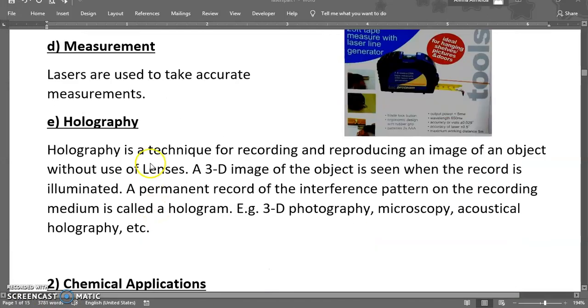Next is holography. Holography is the technique of recording and reproducing an image of an object without the use of lenses. A 3D image of an object is seen when the record is illuminated. A permanent record of the interference pattern on the recording medium is called holography. It is widely used in cinemas, films, 3D photography, microscopy, acoustical holography, etc.